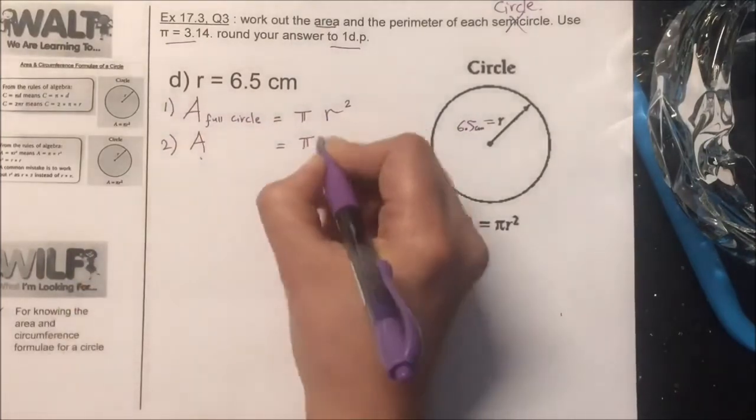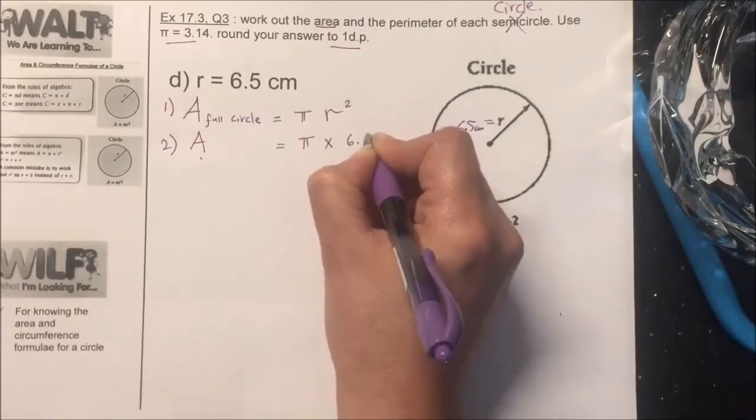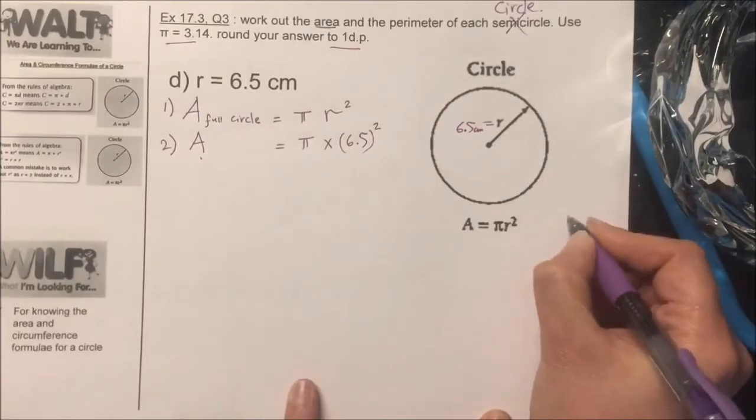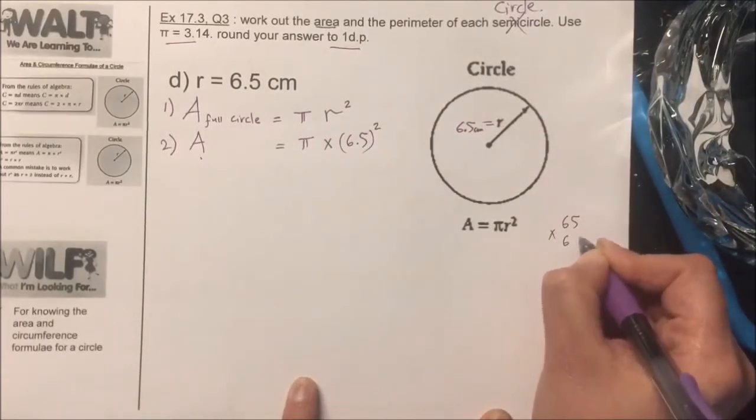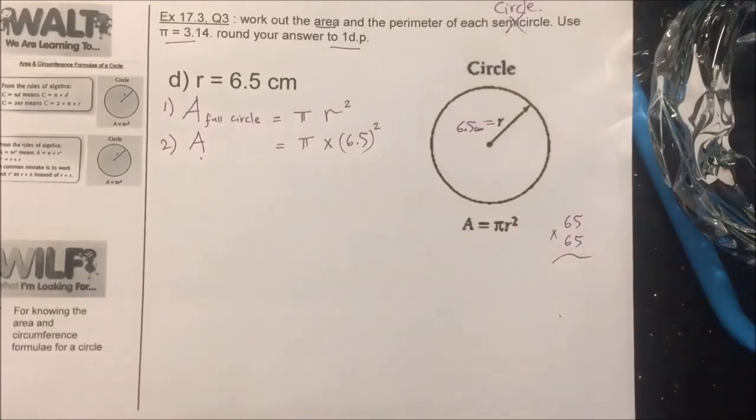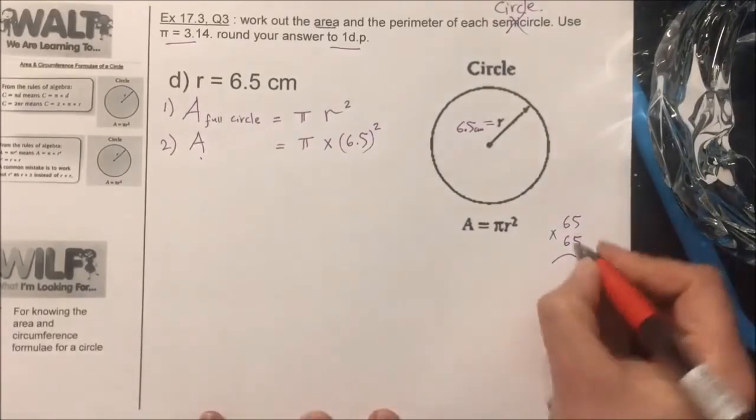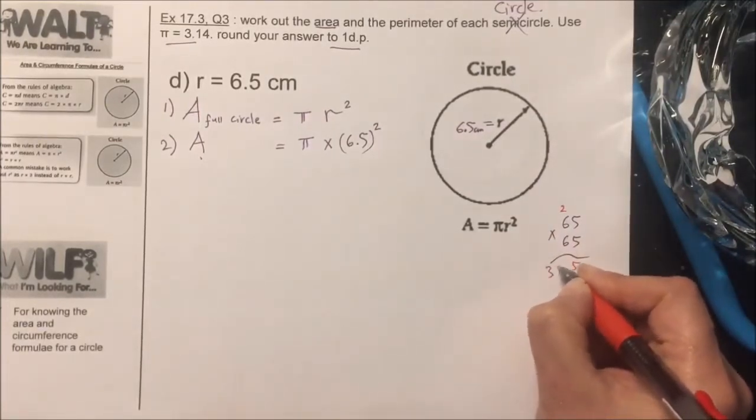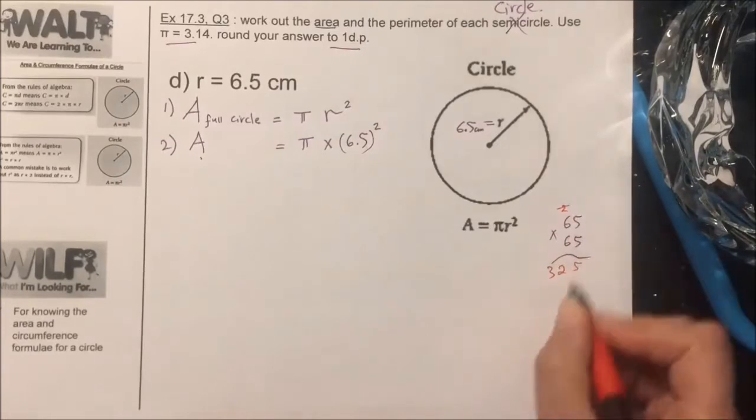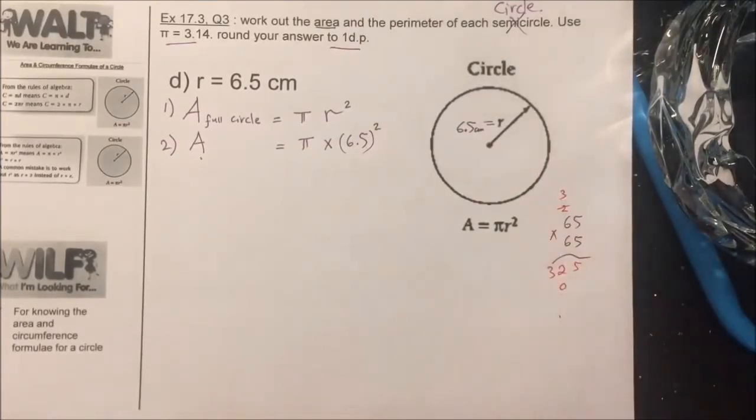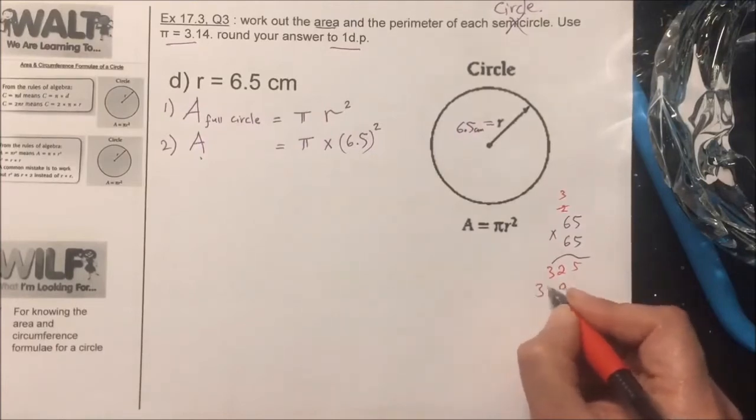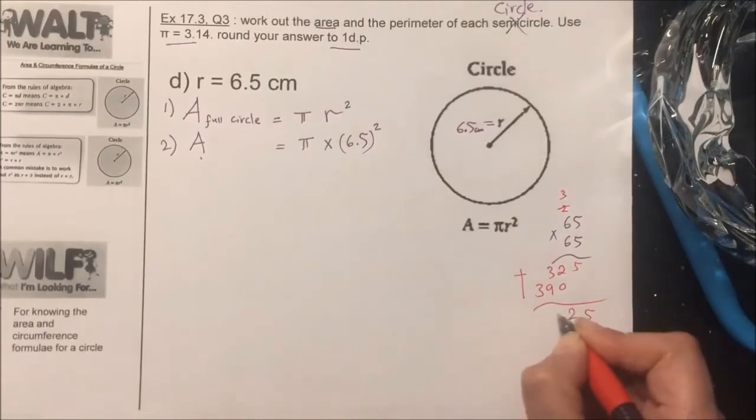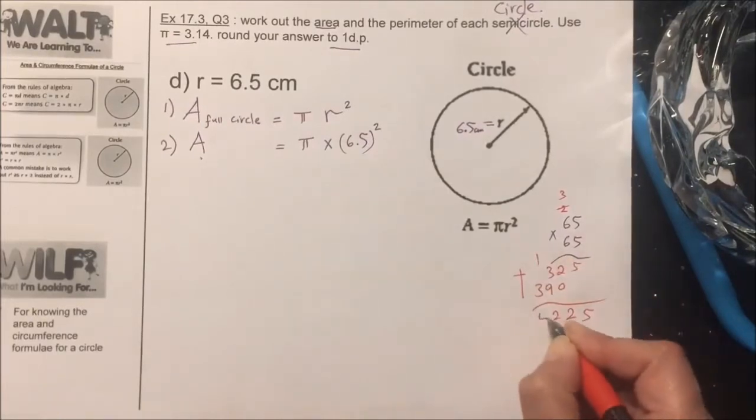I'm gonna keep pi at first as is, times 6.5 all to the power of two. Multiply 65 times 65, ignore the decimal place. Five times five is 25. Six times five is 30 plus 2 is 32. Six times five is 36. Six times six is 36 plus 3 is 39.